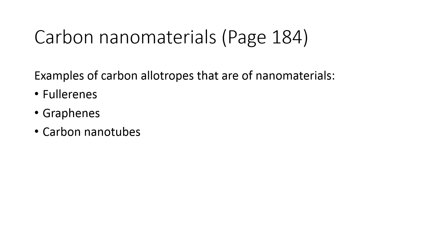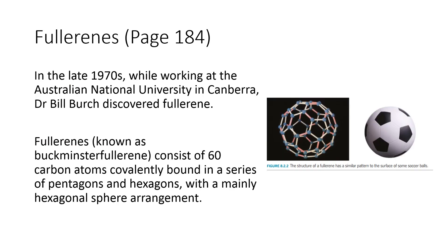Looking at this particular slide, we are looking at carbon nanomaterials. What does nanomaterials mean? If you still remember when we were talking about nanomaterials and nanoscale back in chapter one, we said that they are of nanoscale, which means they are very small. The examples that can fit into the nanostructures are fullerene, graphene, and carbon nanotubes.